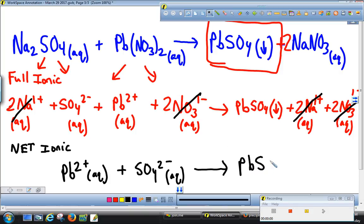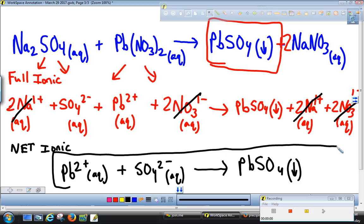So once again, when you rewrite it, keep the precipitate together because it's together. It's not split apart into ions. And so this is my net ionic equation for this reaction. Oops, excuse me. Pen's going crazy. All right. I hope this helps. Have a great day.